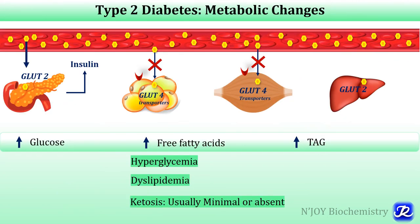The metabolic changes seen in type 2 diabetes mellitus result from insulin resistance. Ultimately there is increased glucose concentration (hyperglycemia), increased free fatty acid levels, and increased triglyceride levels — that is dyslipidemia. In type 2 diabetes there is minimal ketosis or it can be absent because circulating insulin is present. However, due to increased beta oxidation and increased acetyl-CoA pool, there can be increased cholesterol synthesis, so hypercholesterolemia is seen in type 2 diabetes. Type 2 diabetes is characterized by hyperglycemia and dyslipidemia, but usually minimal or absent ketosis.